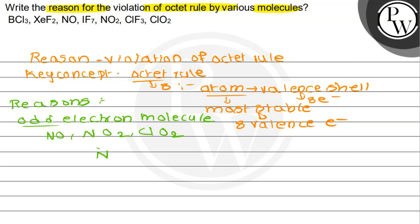For example, the Lewis dot structure for NO. Whenever we count around the nitrogen atom, how many electrons are present? 7 electrons are present around nitrogen. Even though oxygen has 8 electrons, nitrogen has 7 electrons — that means it has an odd number of electrons. This is the first reason for the violation of the octet rule.